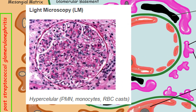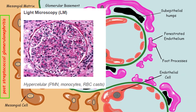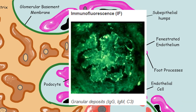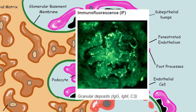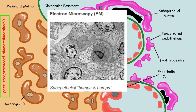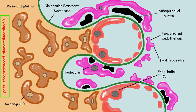On light microscopy, it shows diffuse hypercellularity and mesangial cells in the glomerulus. Immunofluorescence shows granular deposits of IgG and C3. Electron microscopy shows subepithelial humps, which are the immune complexes deposited in the glomerular basement membrane.